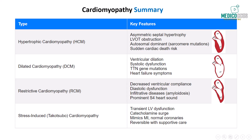Dilated cardiomyopathy involves ventricular dilation and systolic dysfunction. It can be caused by genetic mutations like those in the TTN gene, or by external factors such as alcohol, doxorubicin, or viral infections. Patients typically present with heart failure symptoms and are at risk for cardiac death due to arrhythmias.